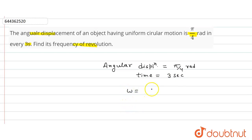That is equal to π/4 into 1/3, that is equal to π upon 12 radian per second. And omega is equal to, we know, 2πf.